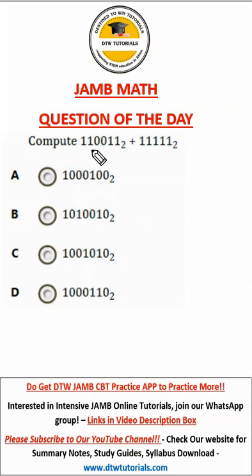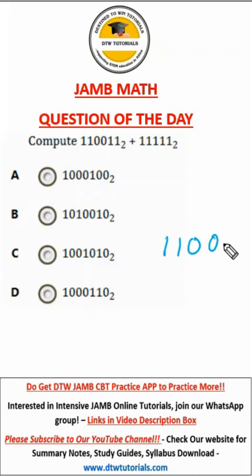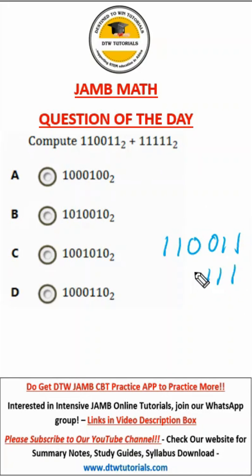Our jump question is: compute this. So we're adding in base 2. So we have 1, 1, 0, 0, 1, 1. These are 5 ones, so we have 1, 1, 1, 1, 1. So we're adding these in base 2.